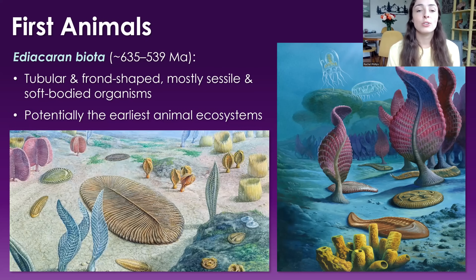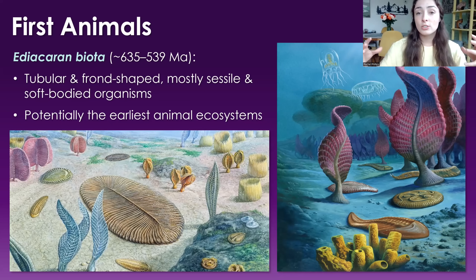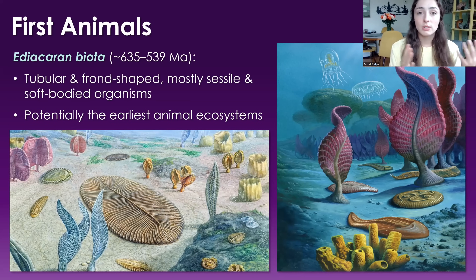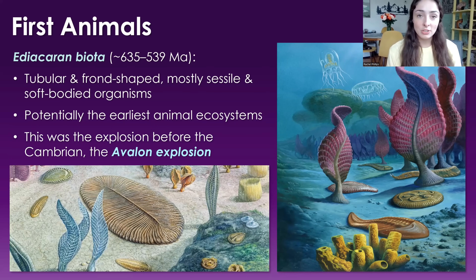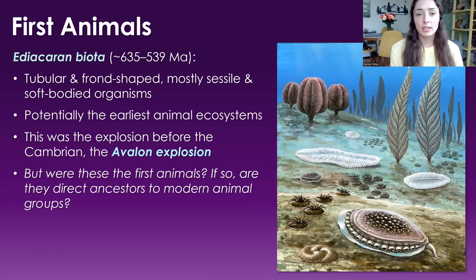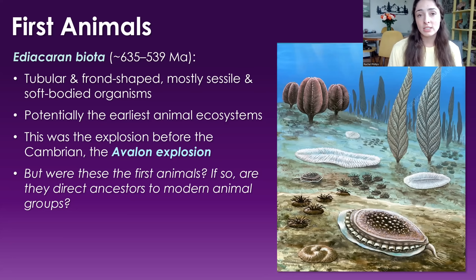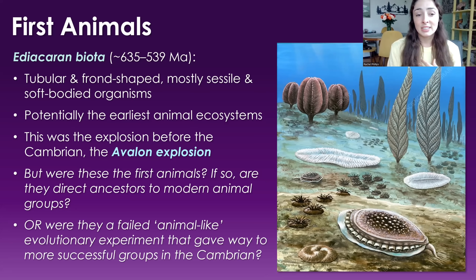What we do know is that these were potentially the earliest animal ecosystems. There may have been early animals that evolved before 635 million years ago. However, in terms of large multicellular animal ecosystems, the Ediacaran is the first appearance of these relatively complex ecosystems — relative to prior to this, not relative to now. We call this the Avalon explosion. There are still a lot of questions: were these even the first animals? If they are animals, are they direct ancestors to modern animal groups, or were they rather a failed evolutionary experiment that gave way to more successful groups in the Cambrian?